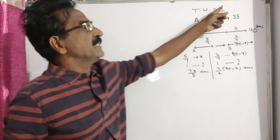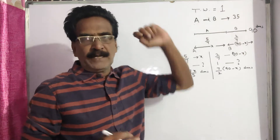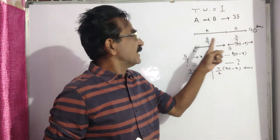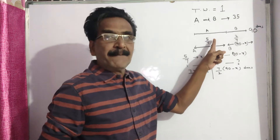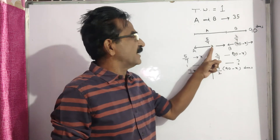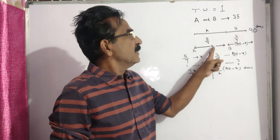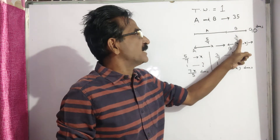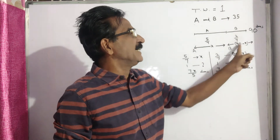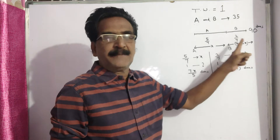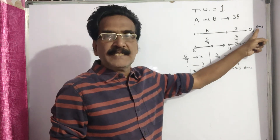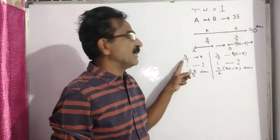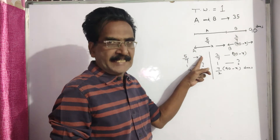Let us say the total work is equal to 1. Now, if A completes 5/7 of the work in X days, then B completes the remaining 2/7 of the work in 90 minus X days, because the total number of days is 90. So A does 5/7 of the work in X days.